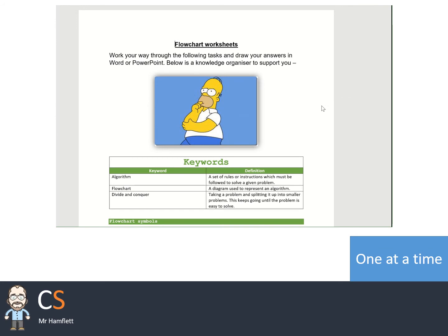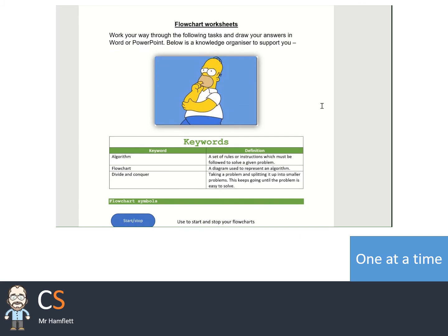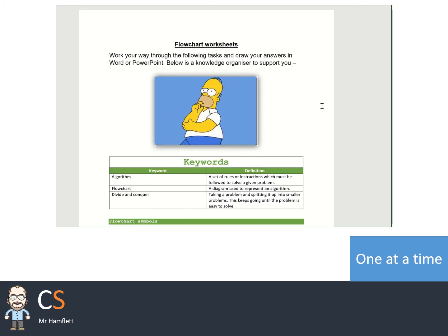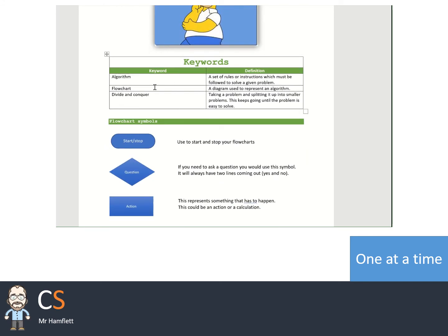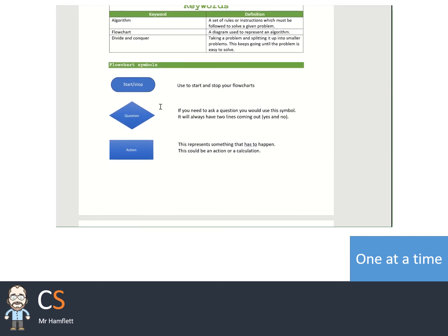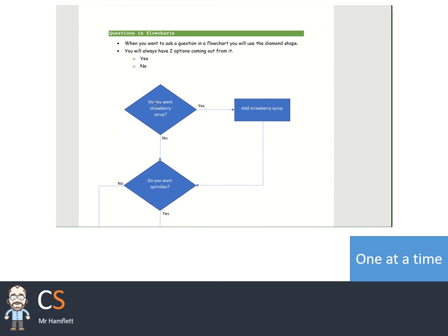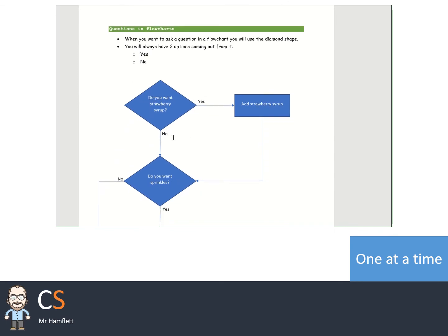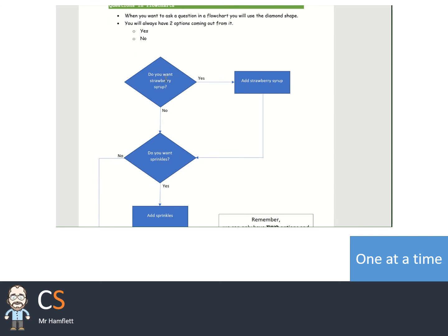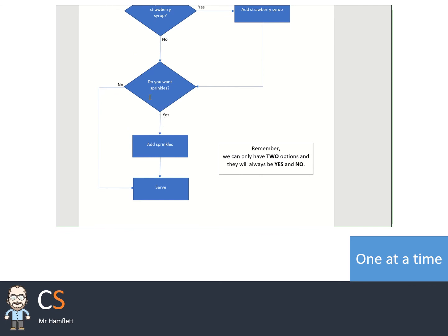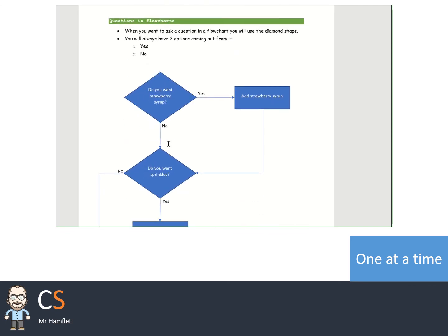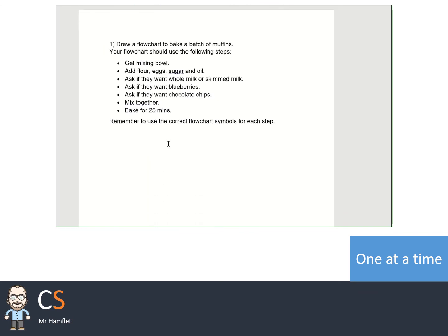So ladies and gentlemen, this is the flowchart worksheet you'll see. It starts off with a picture of Homer. This is part of the knowledge organiser — I've included it to remind you about what we've been learning. I've got my key terms here: what an algorithm is, what a flowchart is. Don't worry about 'divide and conquer' — we'll look at that another time. I've got my flowchart symbols to remind you what they should look like, and also an example of how you lay out your questions. Here we've got two questions: 'Do you want strawberry syrup?' and 'Do you want to add sprinkles?' — laid out correctly.